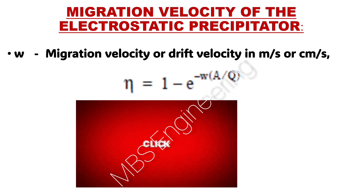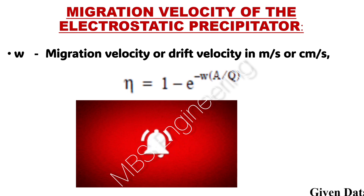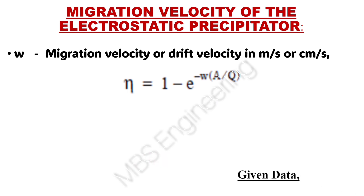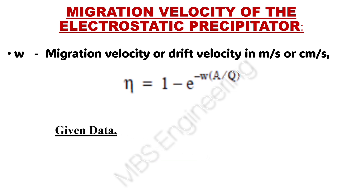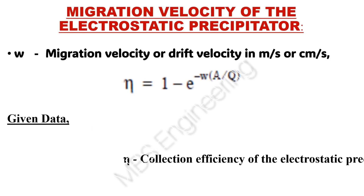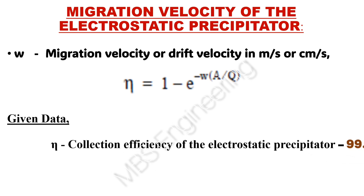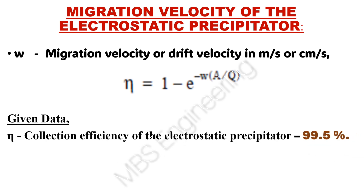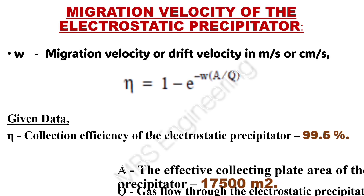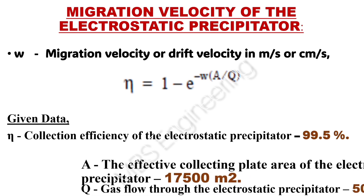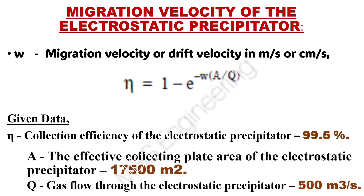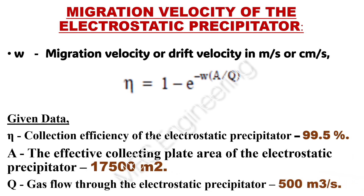If the collection efficiency eta is known in the above equation, we can calculate the drift velocity or migration velocity based on the given data or parameters: collection efficiency of the electrostatic precipitator is 99.5%; the effective collecting plate area A is 17,500 square meters; and gas flow Q through the electrostatic precipitator is 500 cubic meters per second.